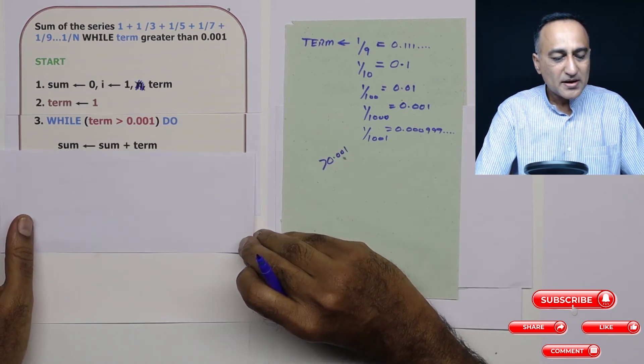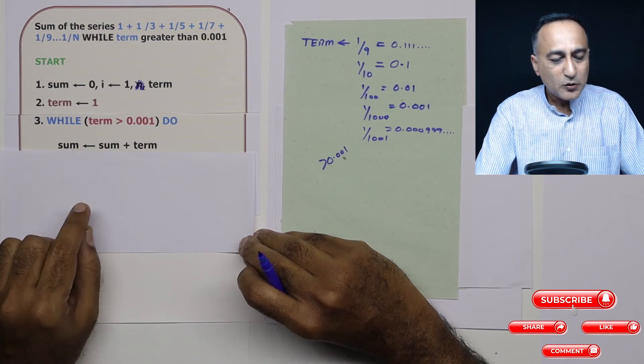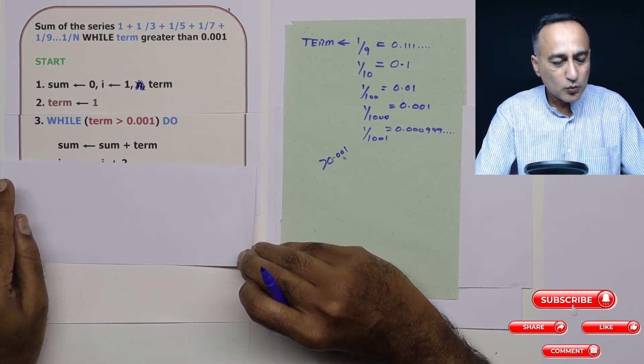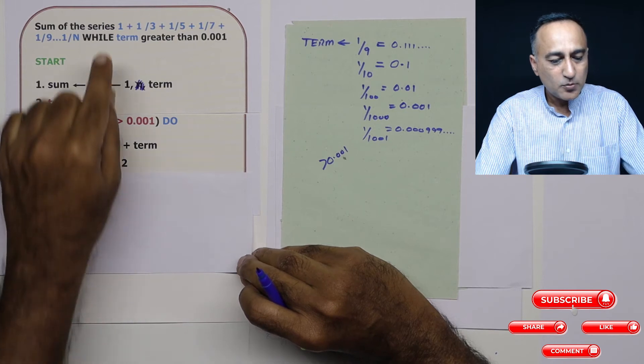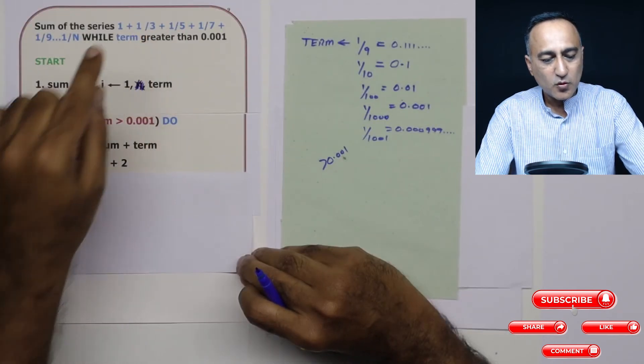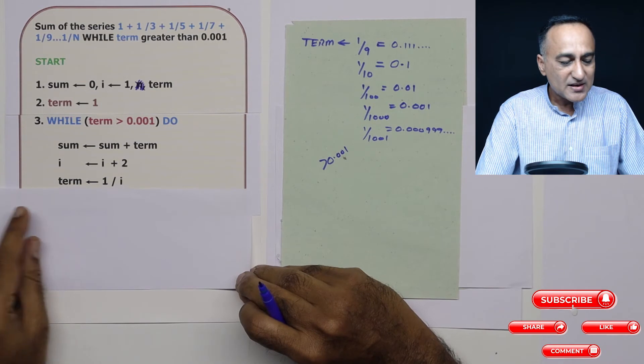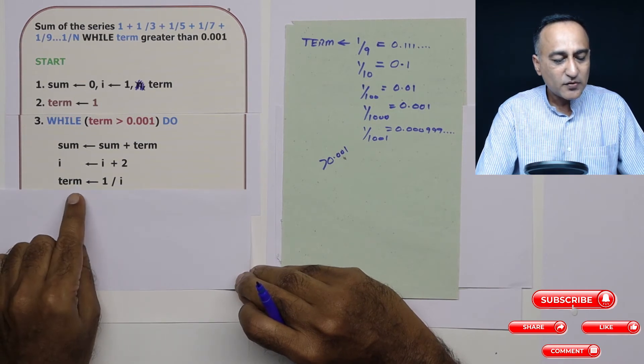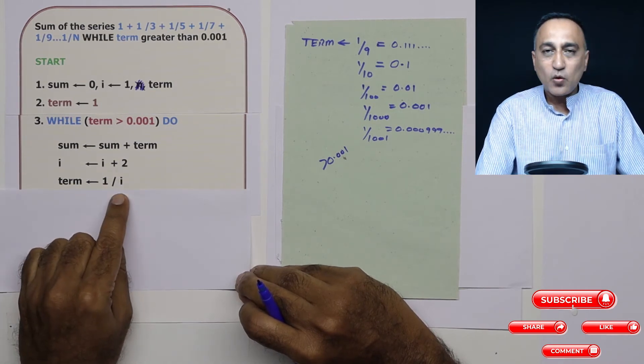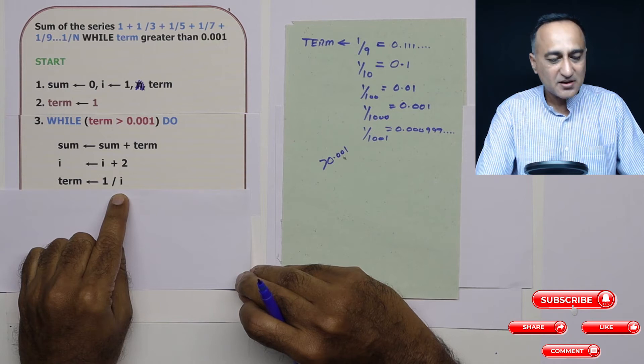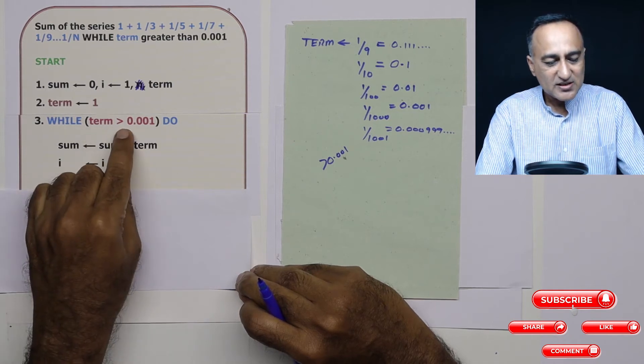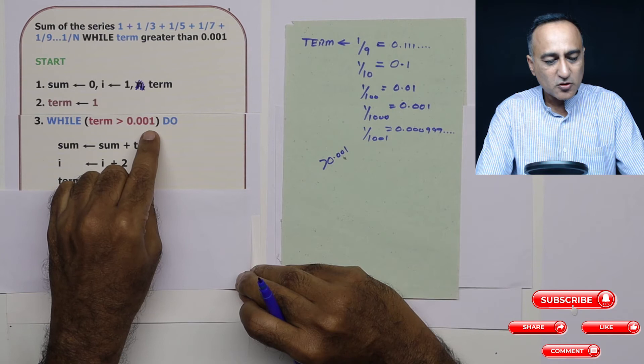Now what I am doing is after this, I need to increase i by 2. So I'm increasing i by 2 because from 1 upon 1, it should go to 1 upon 3. Then next what I am doing is I am calculating the value of term as 1 upon 3. 1 upon 3 is 0.33. 0.33 is still greater than 0.001.